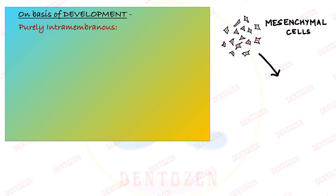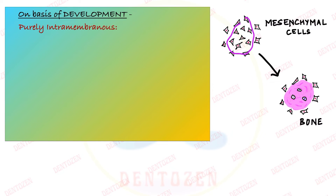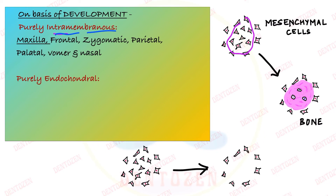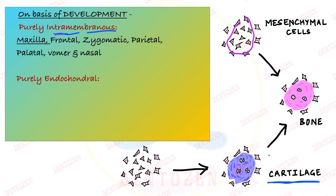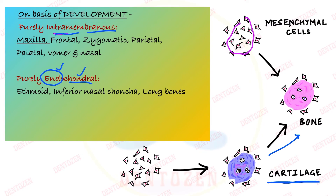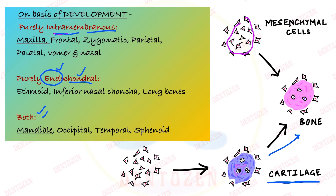Based on formation and development, bone is a mesodermal structure that forms from mesenchymal cells. When these mesenchymal cells form a membrane and bone forms directly within it, it is called intramembranous — intra meaning inside the membrane. Sometimes first a cartilage forms and bone forms within that cartilage; this is called endochondral — endo meaning inside, chondral meaning cartilage. Some bones, including the mandible, can undergo both types of formation.